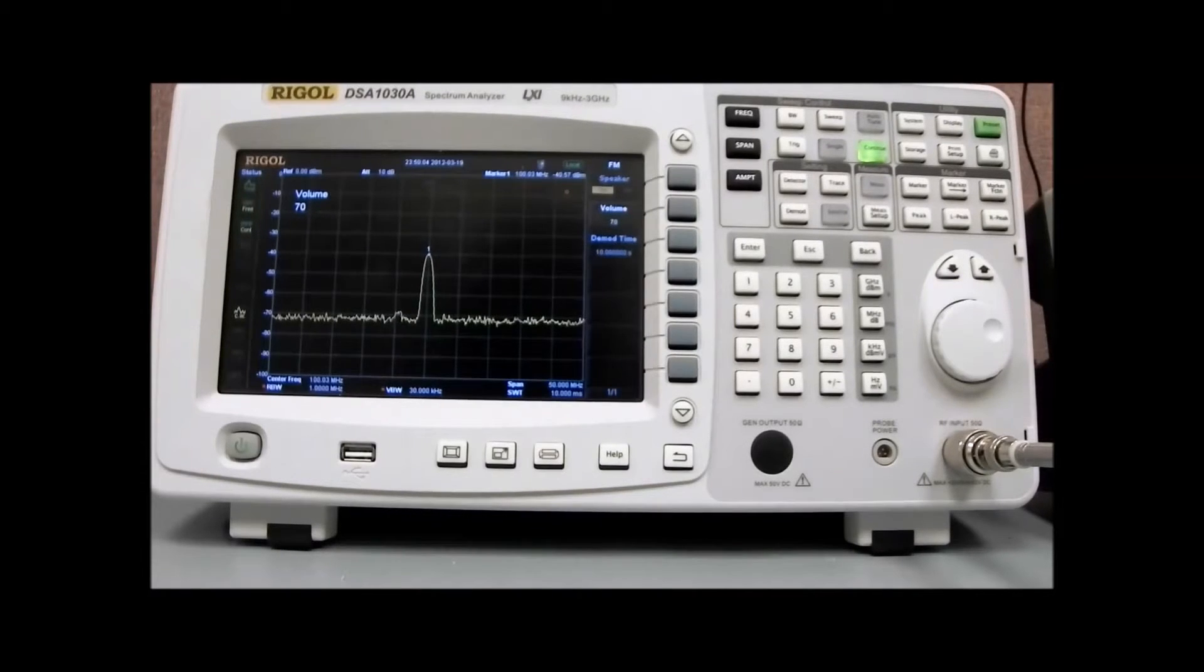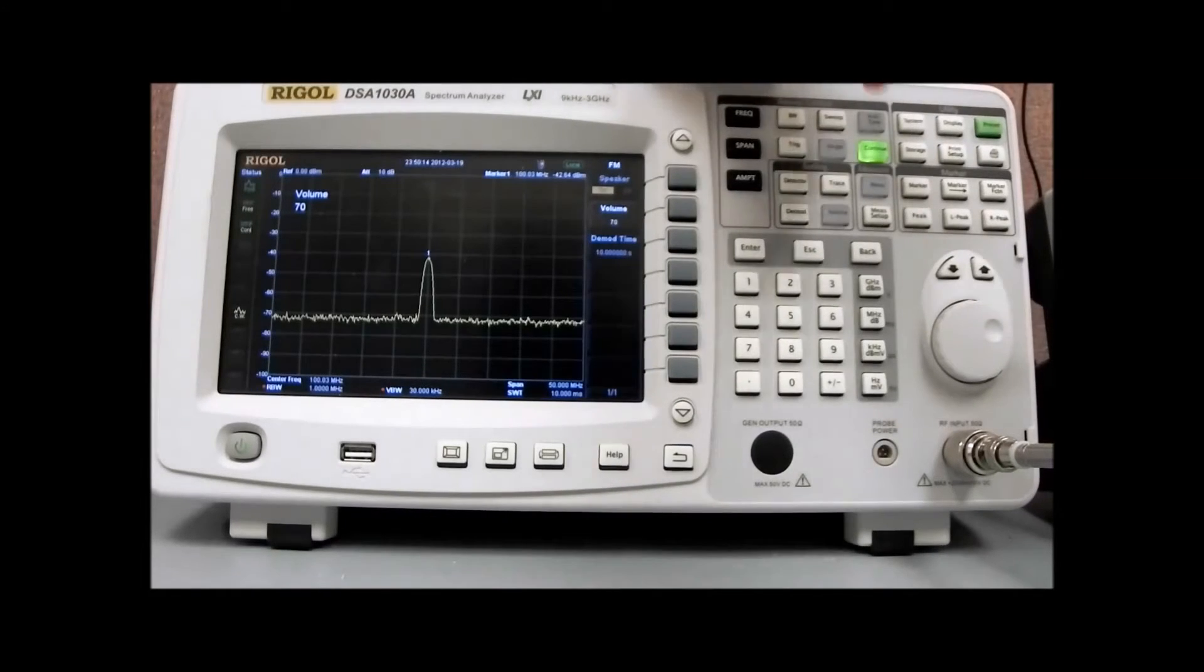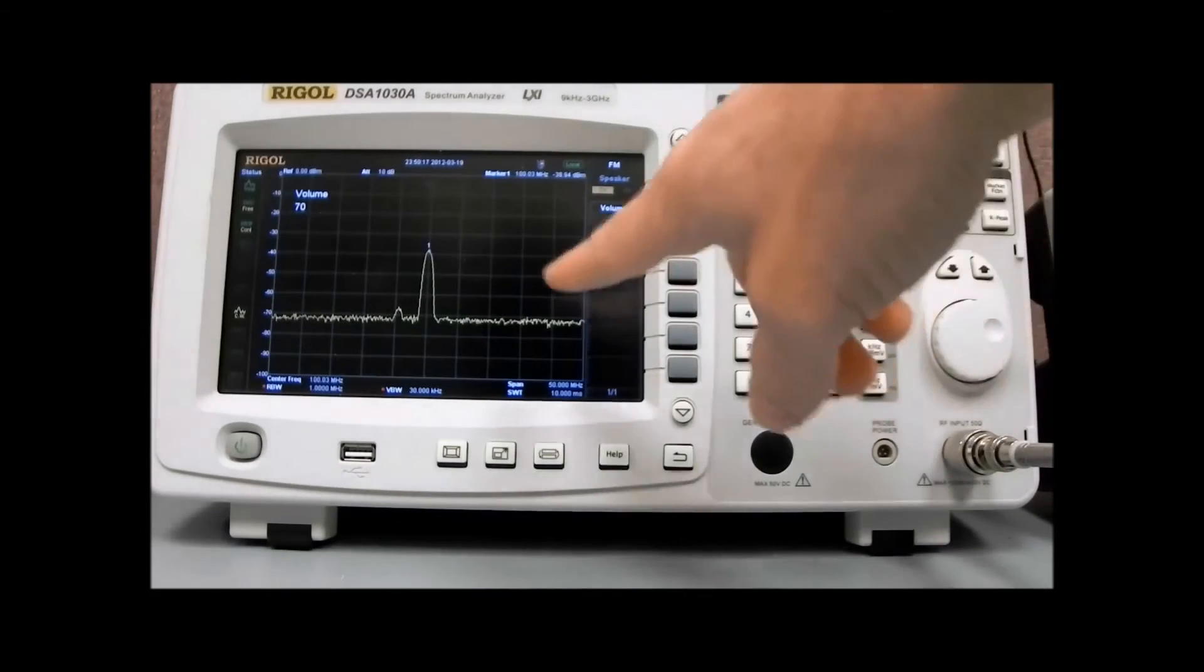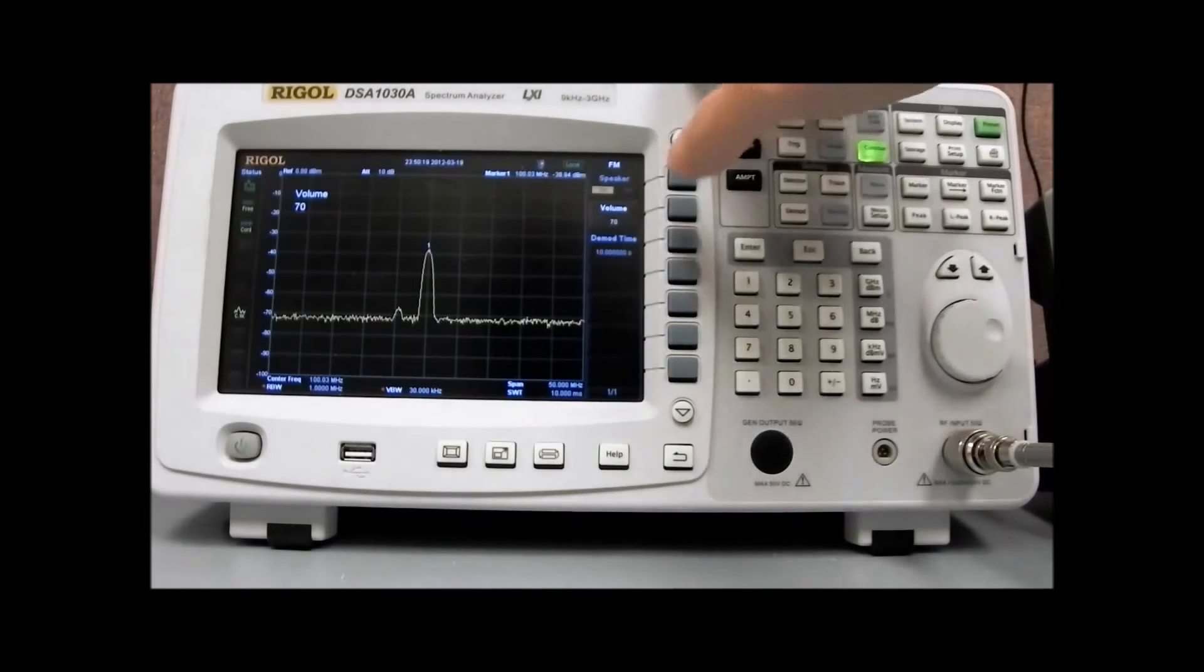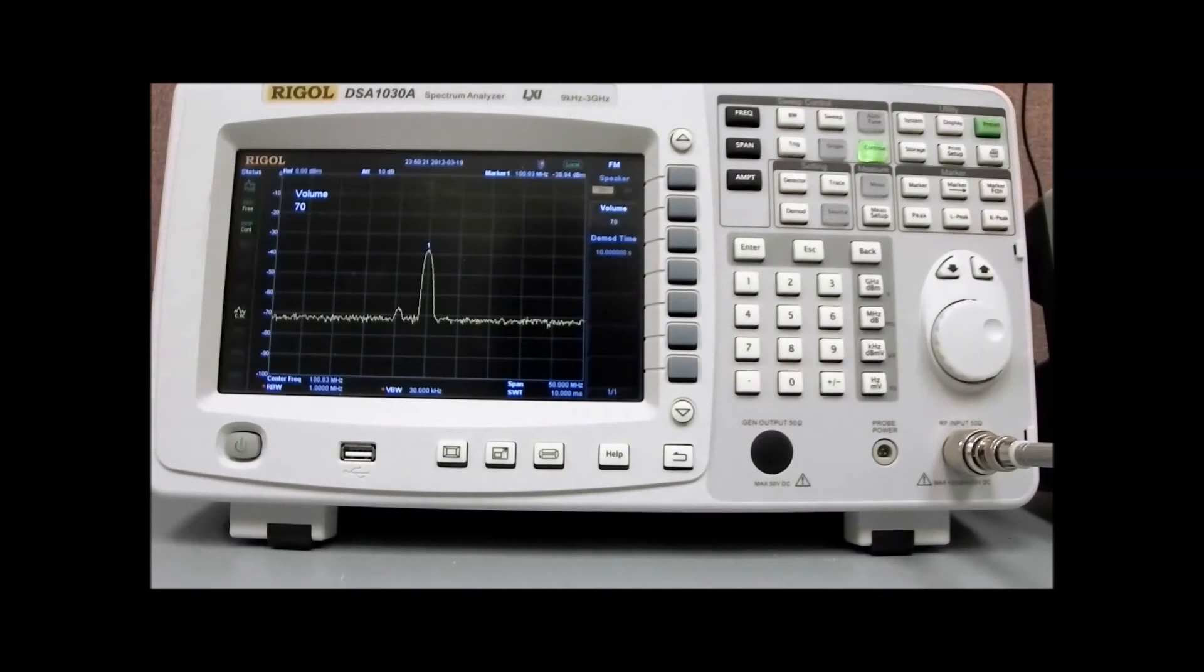And you can hear Bob Dylan in the background. The cell phone, that music, that audio file, is now modulating that FM output for the DG-4000. It's being transmitted to the spectrum analyzer, demodulated in the spectrum analyzer, and then we're also playing it back out through the speaker. So it's a nice little demonstration of RF transmission, a little bit about FM and FM demodulation, and a pretty easy demo to do at home.